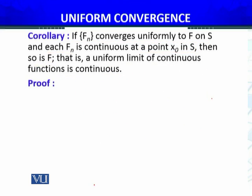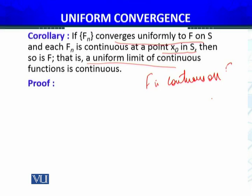Now if we have to prove this statement — that FN converges uniformly to F on S, and each FN is continuous at a point X₀ which is not a particular fixed point of the domain S, then F is also continuous — this can be restated as: a uniform limit of continuous functions is continuous. So F is continuous on S.